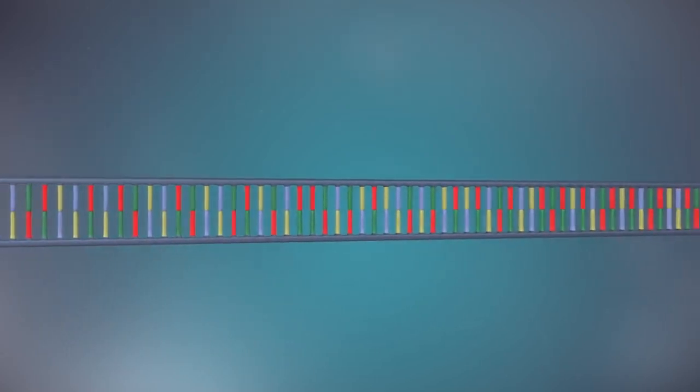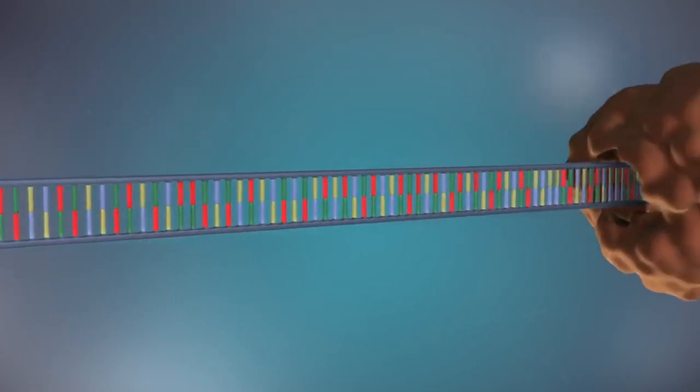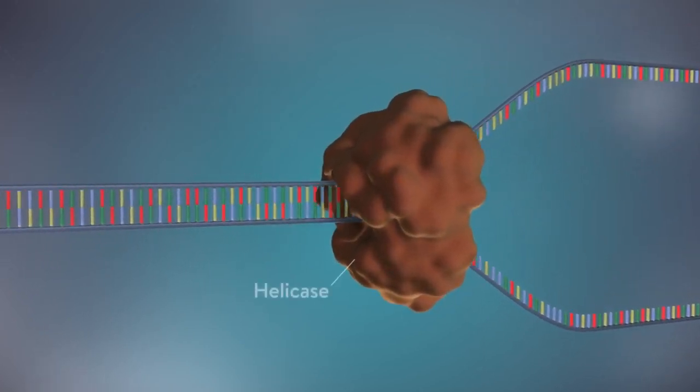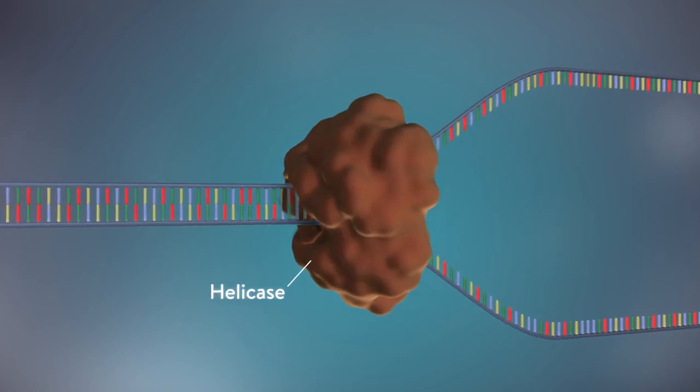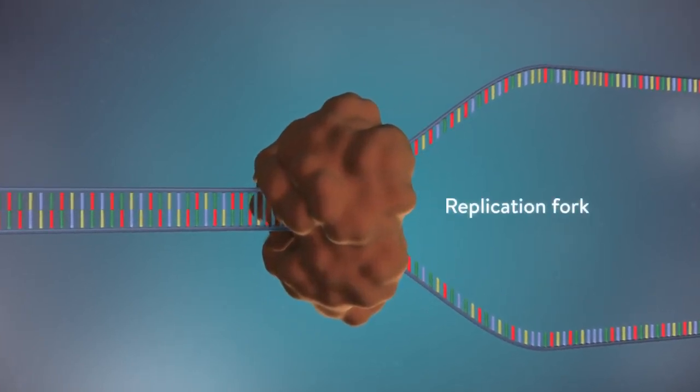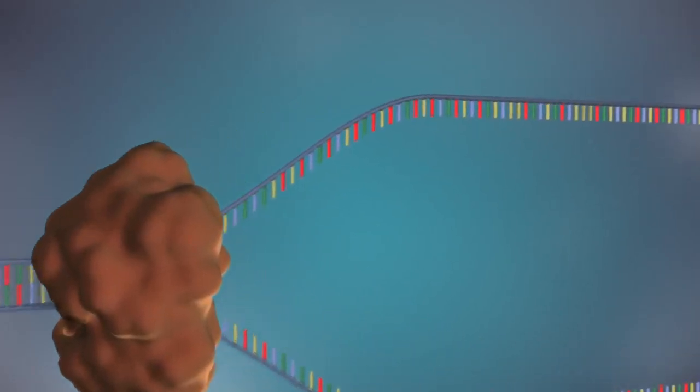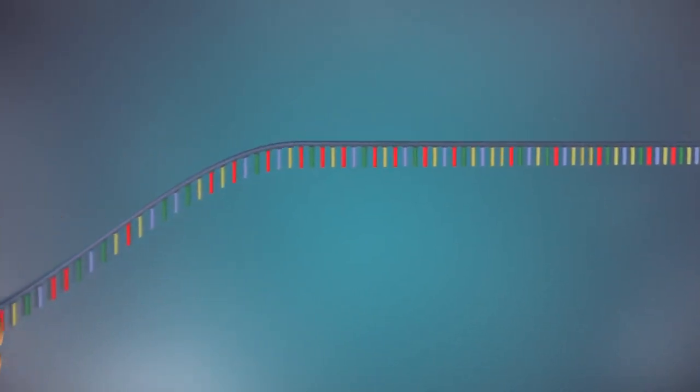The first step in DNA replication is to separate the two strands. This unzipping is done by an enzyme called helicase and results in the formation of a replication fork. The separated strands each provide a template for creating a new strand of DNA.